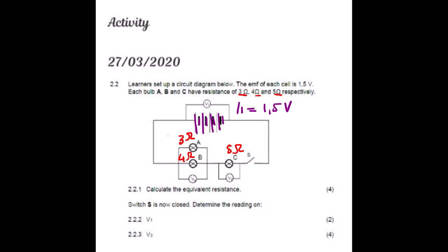This symbol represents a switch that is open, so it's a broken circuit — not a closed circuit. Before going to the questions, we can quickly analyze the diagram. We have three voltmeters: V1 is connected across the cells, V2 is connected across bulb B, and V3 is connected across bulb C. The connection type shows A and B in parallel, and C connected in series.